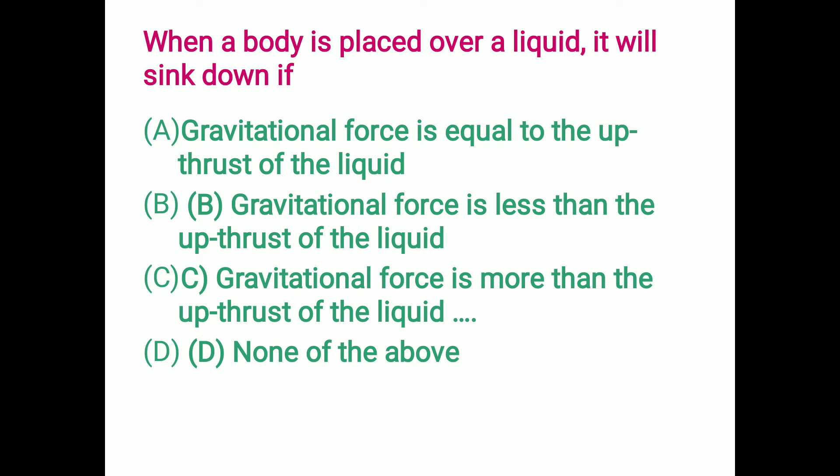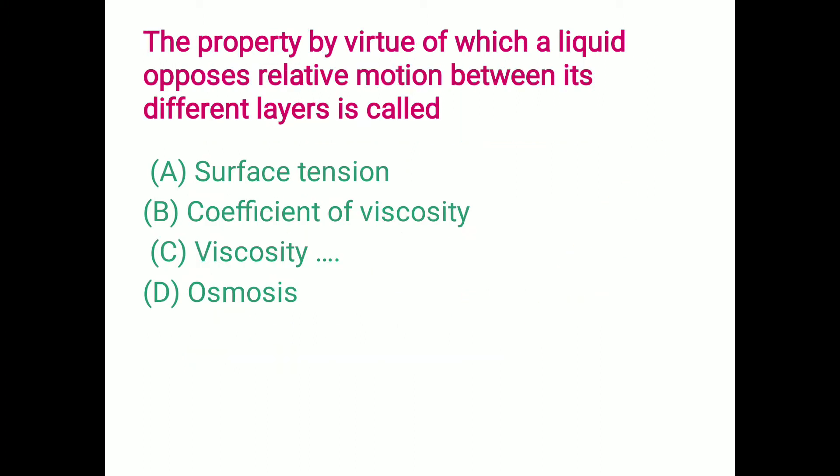When a body is placed over a liquid, it will sink down. What is the reason behind it? Options: gravitational force equals upthrust of the liquid; gravitational force is less than the upthrust; gravitational force is more than the upthrust. The correct answer is option C — gravitational force is more than the upthrust of the liquid.